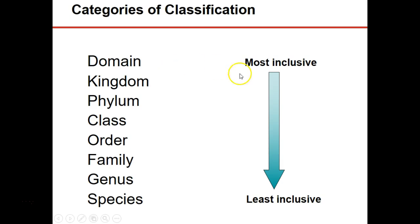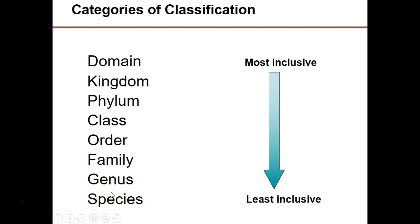Domain is the most inclusive, meaning the most organisms will fall under the same domain. At the species level, there will be very few organisms — only one type, like humans. But under a genus like Homo, there can be more than one species, such as Homo sapien and Homo erectus. So domain includes all organisms with similar characteristics, like eukaryotes. Then we move into kingdom — for example, kingdom Animalia, where dogs, worms, and humans all fall. Then phylum, class, order, family, genus, and species.